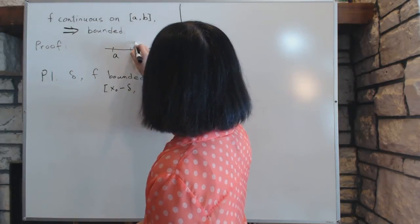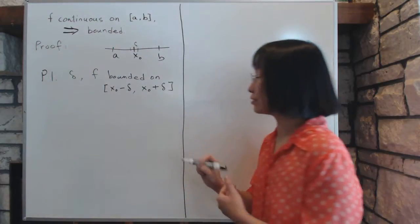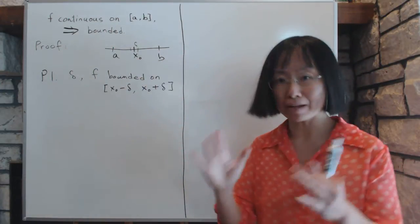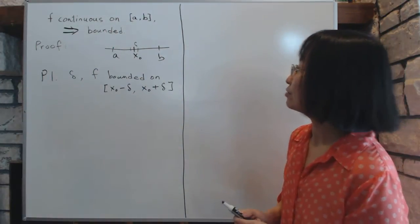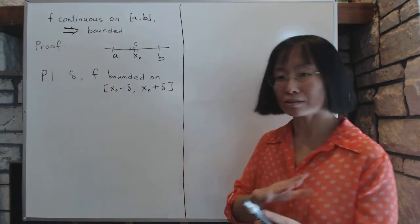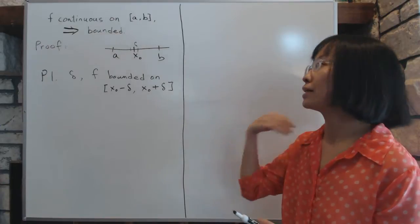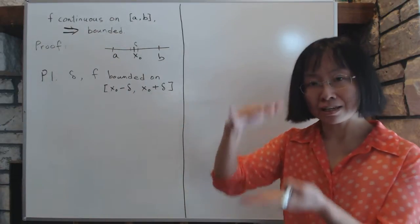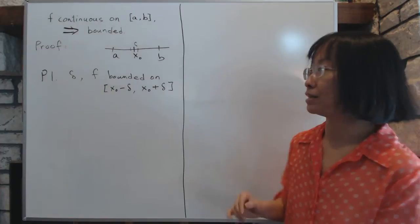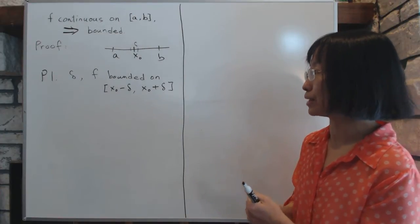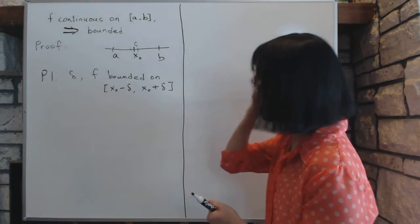So there's a very tiny little interval here that has the length of delta that at least f is going to be bounded on that little interval. And that goes directly from the definition of f being continuous. Being continuous means you can find a delta such that you can limit the value of f within epsilon of where it's supposed to be. So then f is bounded.